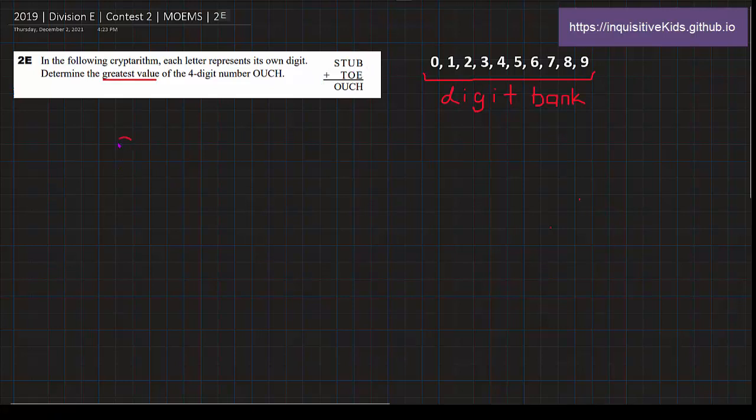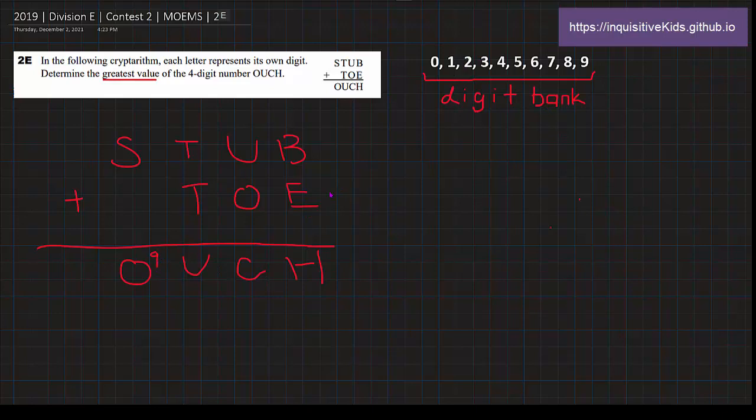First, I'm going to copy down the problem: STU plus TOE equals OUCH. We're trying to find the greatest value of the 4-digit number OUCH, which means that the first digit, because it's the largest place value, has to equal 9. That's probably true because we want to find the greatest value. So right off the bat, we know that O equals 9, and that's crossed out.